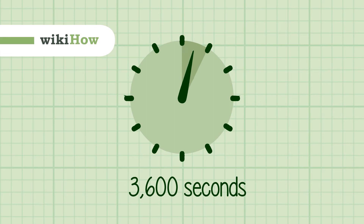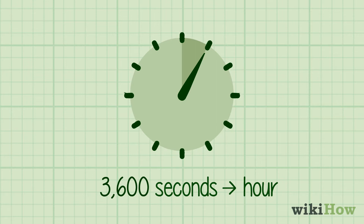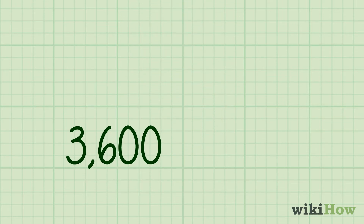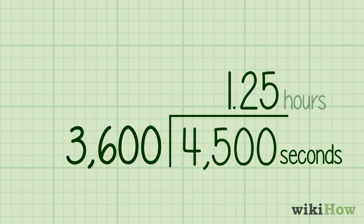Since there are 3,600 seconds in an hour, the easiest way to convert seconds to hours is to divide by 3,600. For instance, 4,500 seconds divided by 3,600 is 1.25 hours.